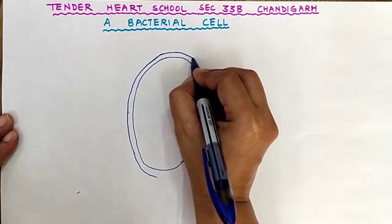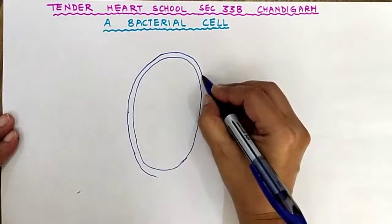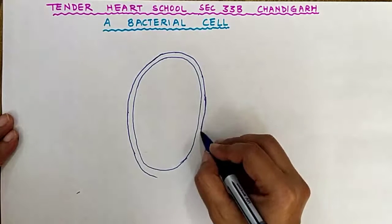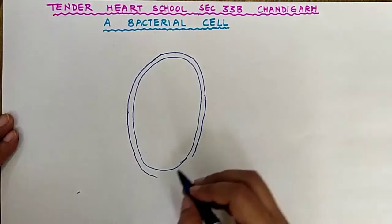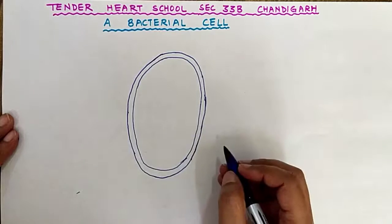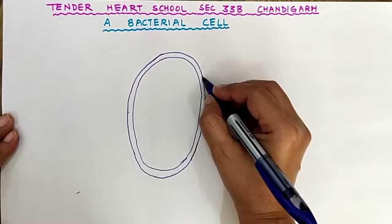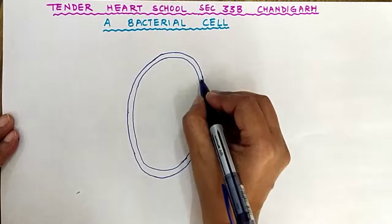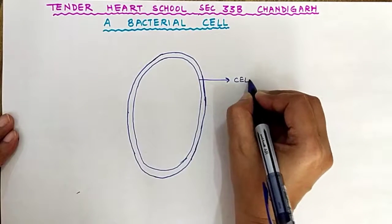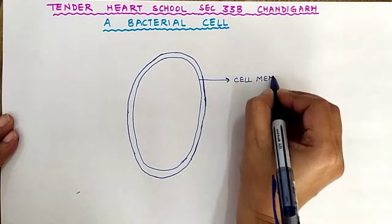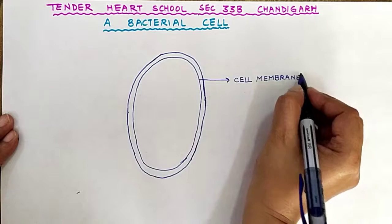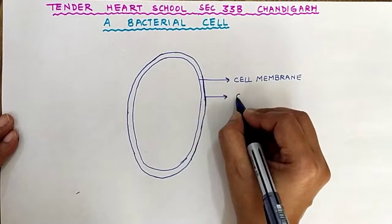This bacterial cell also has a cell wall, but it is quite different from the plant cell. In the plant cell, the cell wall is made up of cellulose, while in the bacterial cell, the cell wall is made up of peptidoglycan. So let us label this — this is your cell membrane, and the outer one is your cell wall.